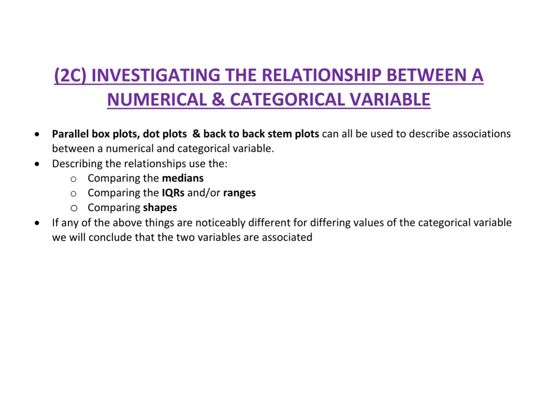In this lesson we're going to look at still bivariate data, but this time we're going to have a numerical variable and a categorical variable. We're going to look at ways that it can be displayed in different ways. So parallel box plots, dot plots, back-to-back stem plots can all be used to describe associations between a numerical and a categorical variable.